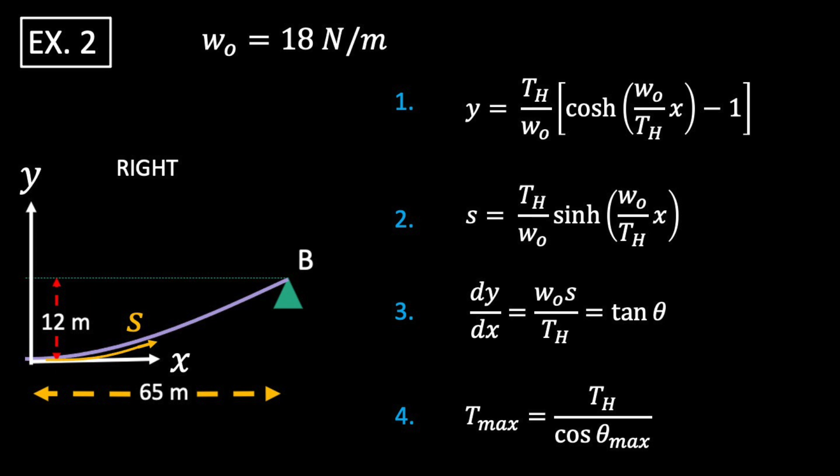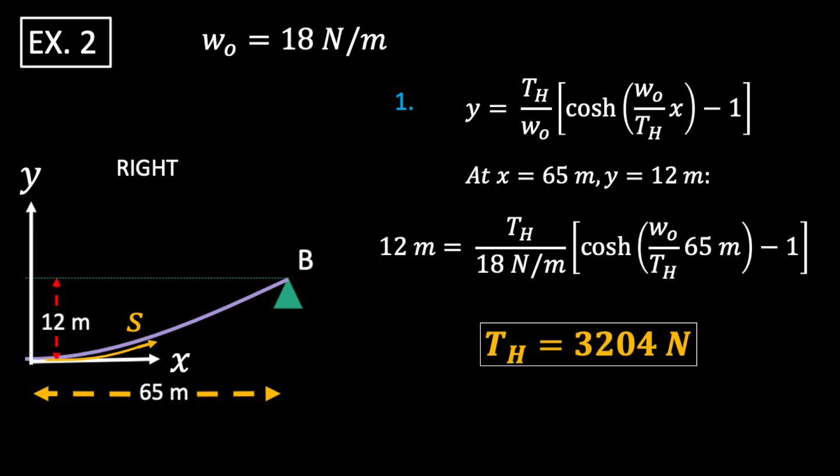First we'll use our deflection curve and boundary condition to find our horizontal tension. Then we'll find the cable length and use it to find the cable angle at B. From there, we can solve for our tension at support B. At B, X is 65 meters and Y is 12 meters. We put those into our deflection curve.